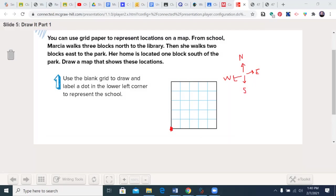Let me make sure there's a compass. We need to read through here: From school, walks three blocks north. North means up, and each of these sections is one block, so one, two, three. I'm going to label that with an S for school. Oops, to the library, sorry. So it's an L. There's S for school. Then she walks two blocks east to the park, so one and two.